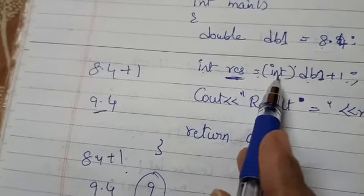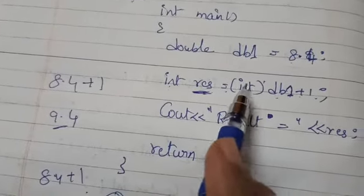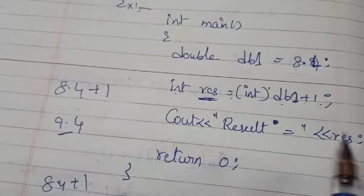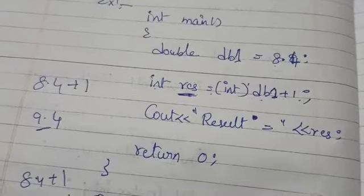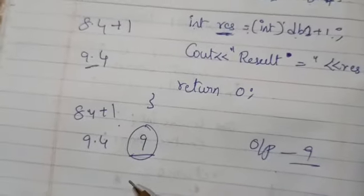User wants to write this integer type. User wants to convert this data type float to integer. If you print this RES, you will get output as 9. Thank you. If you have any doubts, text me.